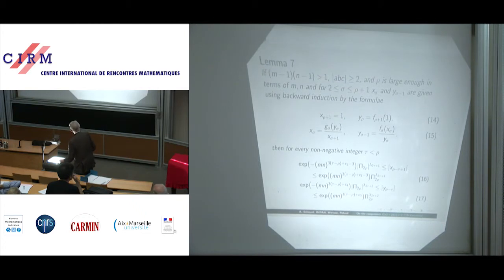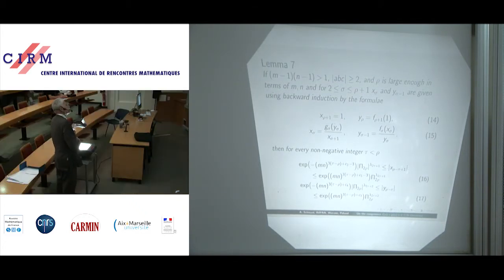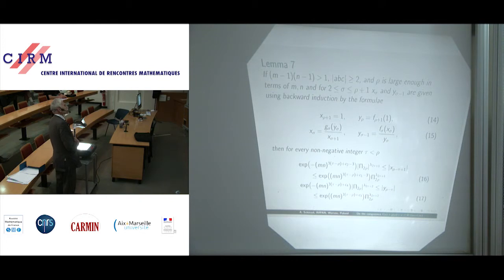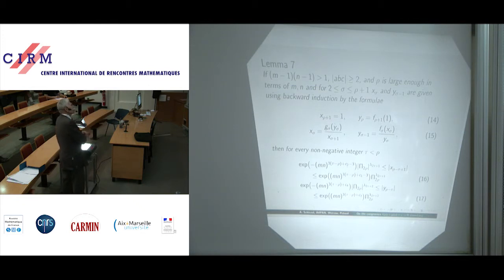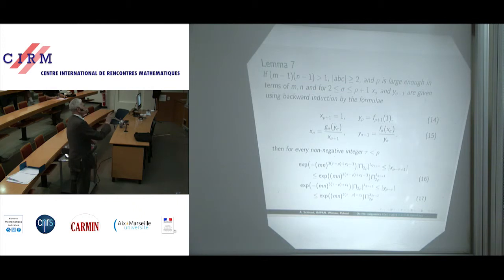Lemma 7: if (m−1)(n−1) is greater than 1, and |ABC| is in absolute value greater than or equal to 2, and rho is large enough in terms of mn, and for sigma greater than or equal to 2 and less than or equal to rho plus 1, x_sigma and y_{sigma−1} are given using backward induction by the formula: x_{rho+1} equals 1, y_rho equals f_{rho+1}(1), x_sigma equals g_sigma(y_sigma) divided by x_{sigma+1}, and y_{sigma−1} equals f_sigma(x_sigma) divided by y_sigma.